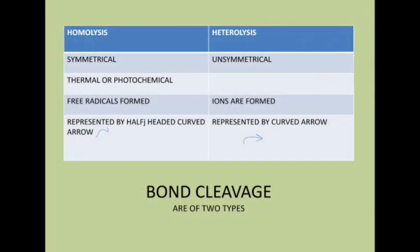Now, we can see the two factors of bond cleavage and the differences in a tabular manner. Homolysis is a symmetrical breaking, while heterolysis is an asymmetrical breaking. Homolysis is generally caused by thermal or photochemical cleavage; in heterolysis, ionic factors result in the cleavage. In homolysis, free radicals are formed; in heterolysis, ions are formed. Homolysis is represented by half-headed arrows (fish hook arrows), and heterolysis is represented by full-headed curved arrows with two heads.